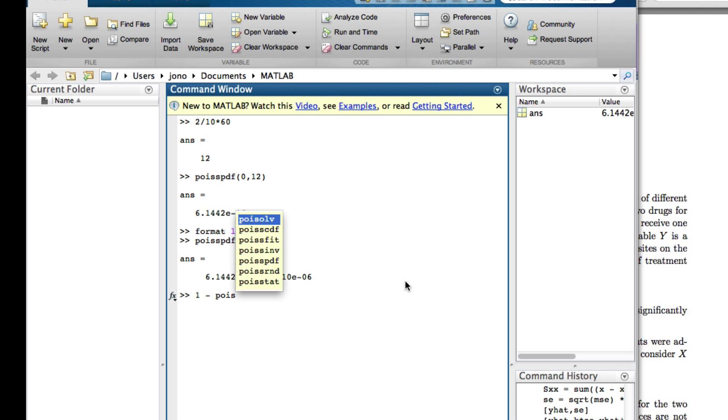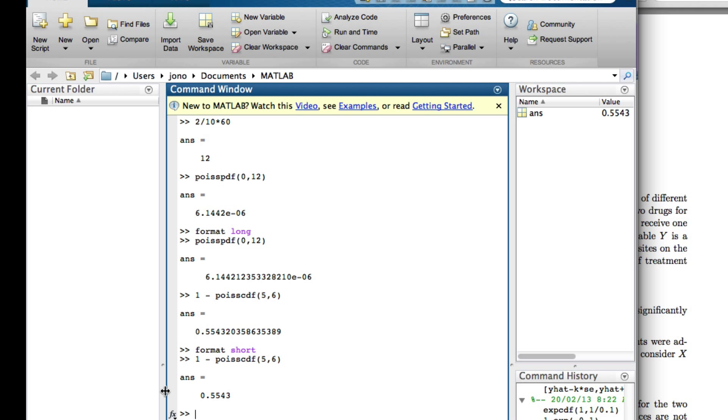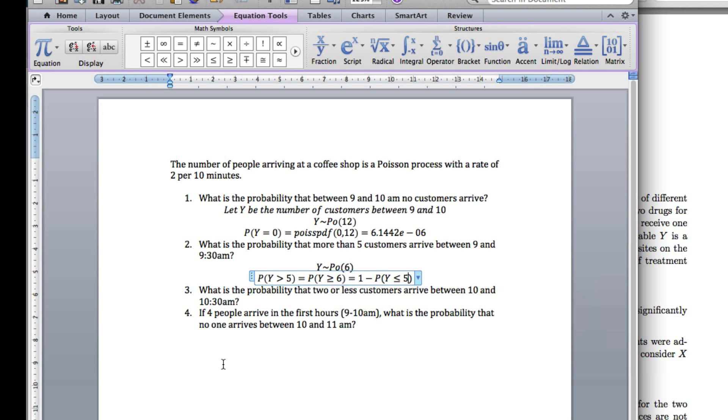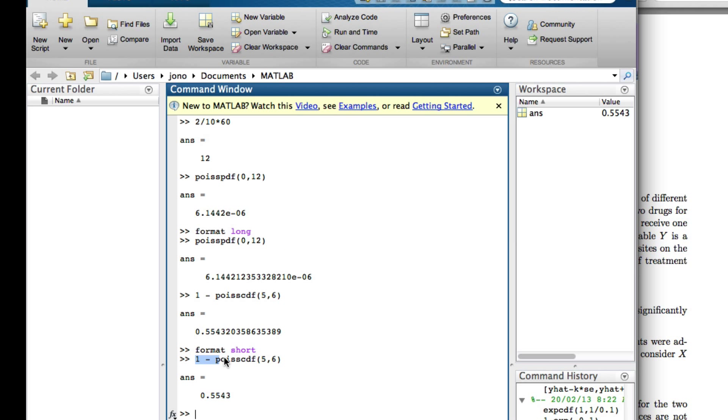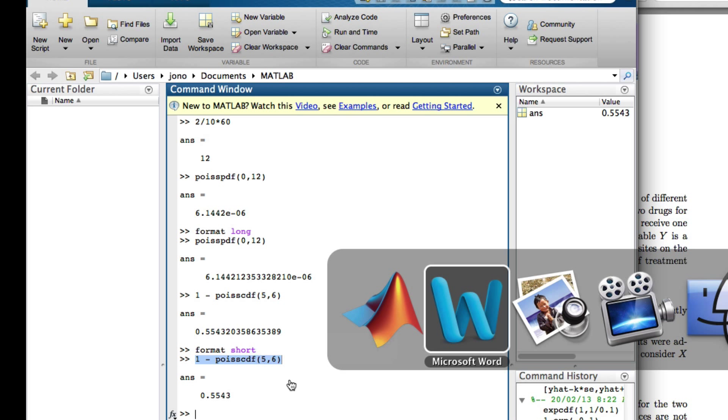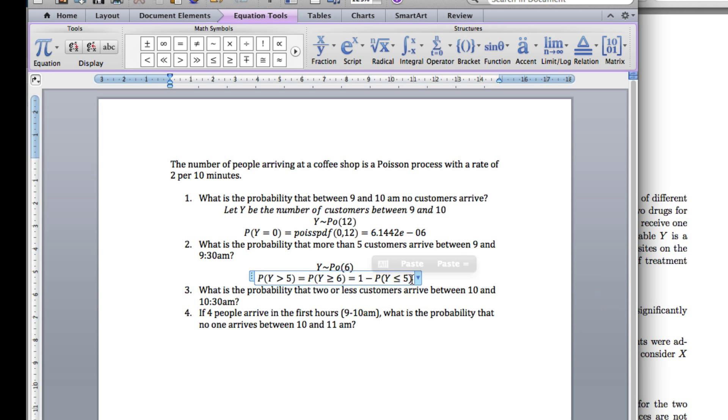1 minus poisscdf. I'm doing less than or equal, so it's CDF. We've got 5, 6, that's the answer. Actually, I might make that back to format short. That's easy enough. Copy. In fact, let me get the command as well, because I told you that's a good idea. So that equals that. All done.